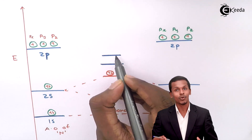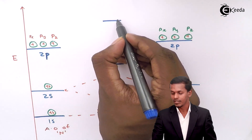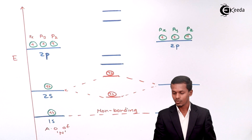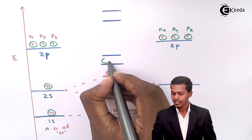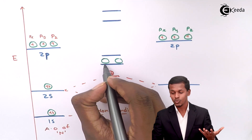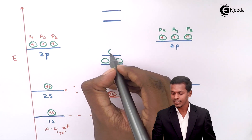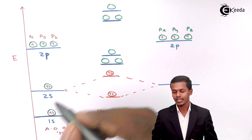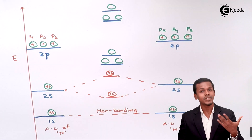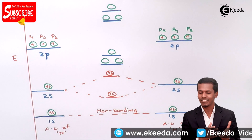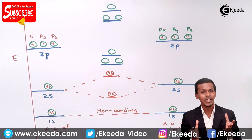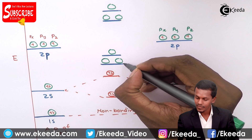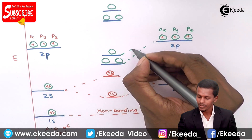So 2 energy levels will be in the bonding orbital while 2 energy levels will be in the anti-bonding orbital. For the bonding side we have pi 2px, pi 2py, and sigma 2pz. For the anti-bonding side we have pi* 2px, pi* 2py, and sigma* 2pz. This is because the 2s and 2p orbitals have almost similar energy, so they distribute themselves in this manner.